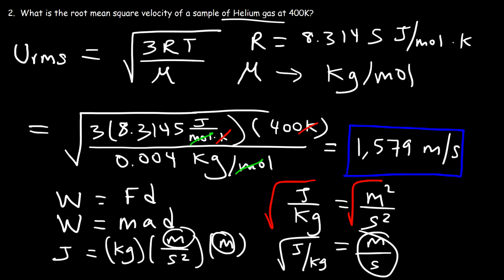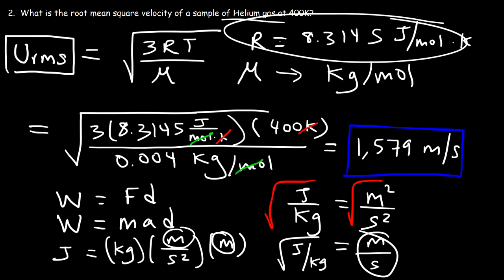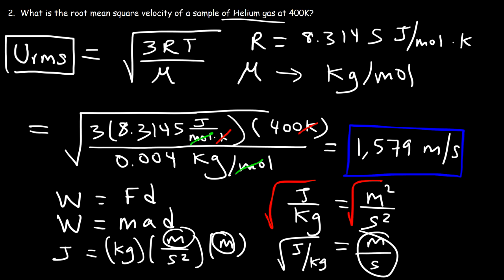So any time you need to calculate the root mean square velocity, if you use this particular R value and the molar mass is in kilograms per mole, your final answer should have units of meters per second.